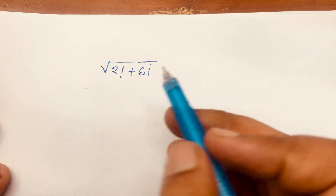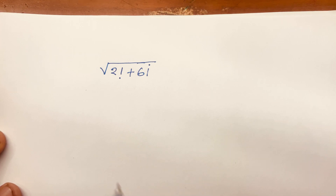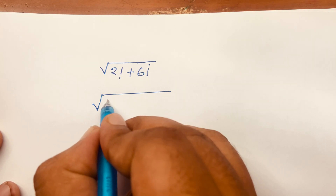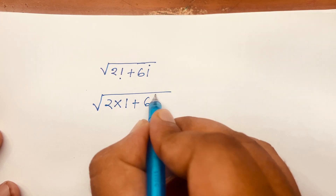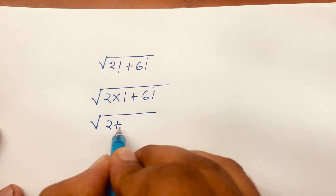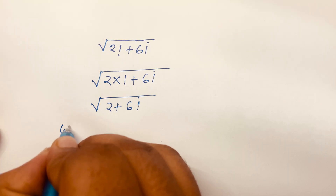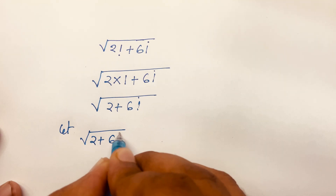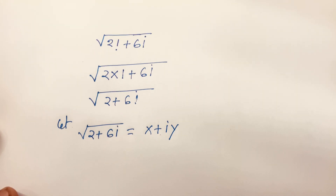How to solve square root of 2 factorial plus 6i. First, 2 factorial equals 2 times 1, so the expression becomes square root of 2 plus 6i.